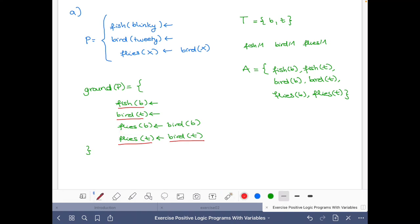Then we finish the exercise, just writing down here the stable model: fish(blinky), bird(tweety), and flies(tweety). And that's it. As you have seen, this was very easy. Let's move then to the next one.